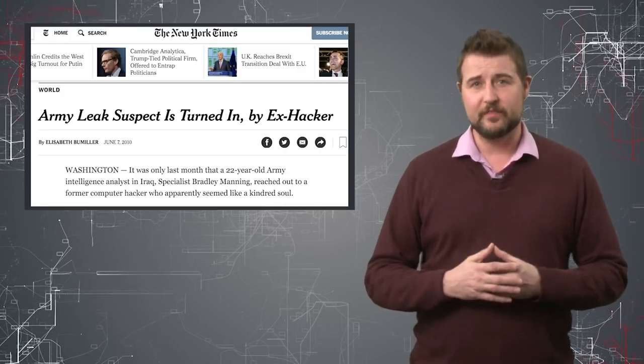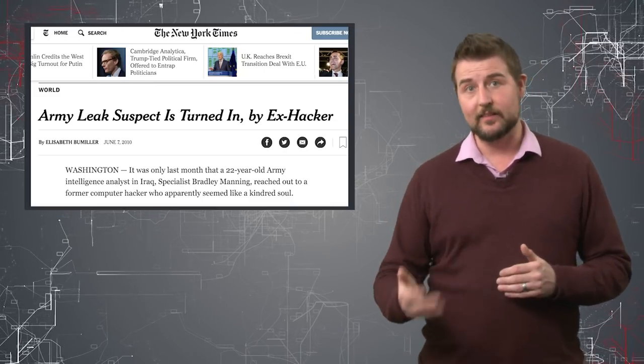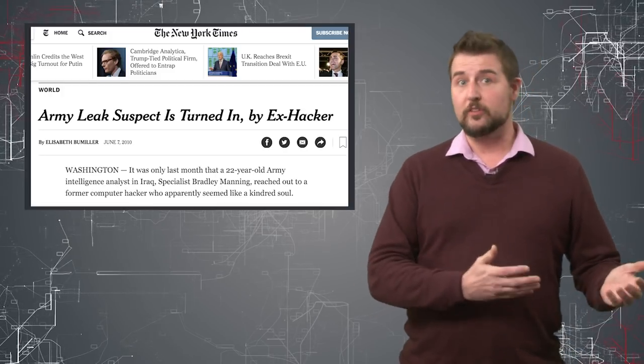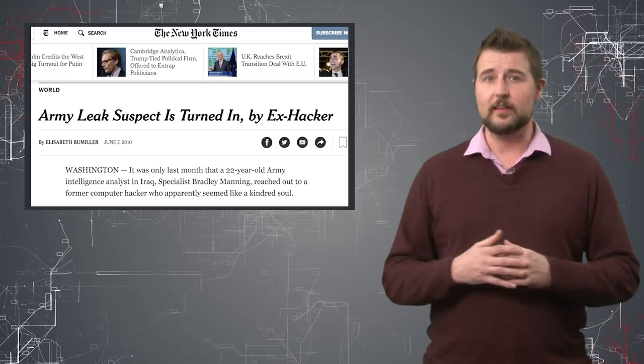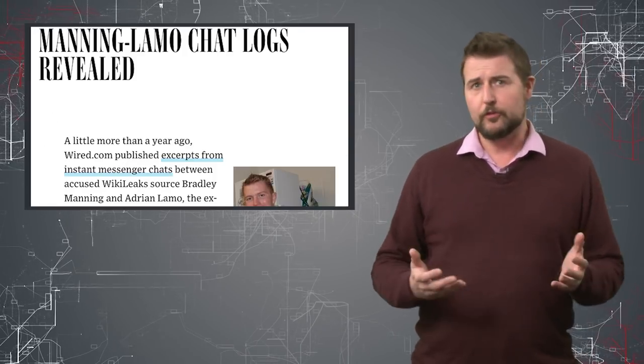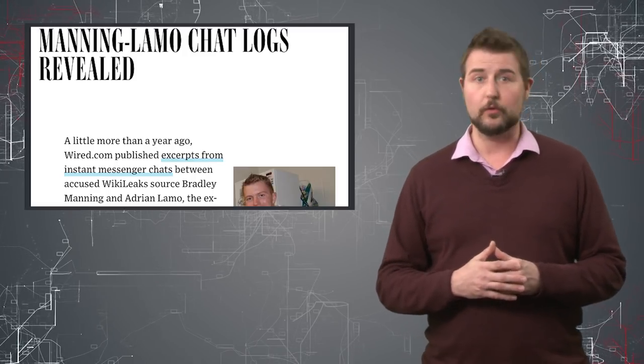To add to his infamy, Adrian Lamo was also known as the guy that outed Chelsea Manning and his leaks to the FBI. Back when Chelsea Manning, then known as Bradley Manning, was doing all his leaks, he contacted Adrian Lamo and actually let him know about it, presumably because he heard about Adrian and his gray hat hacking ways through the press.